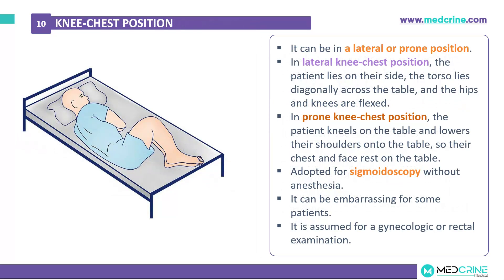Knee chest position can be in a lateral or prone orientation. In the lateral knee chest position, the patient lies on the side, the torso lies diagonally across the table, and the hips and knees are flexed. In the prone knee chest position, the patient kneels on the table and lowers their shoulders onto the table so that their chest and face rest on the table. This is adopted in cases of sigmoidoscopy without anesthesia, though it can be embarrassing for some patients, and is also used for gynecological or rectal examinations.